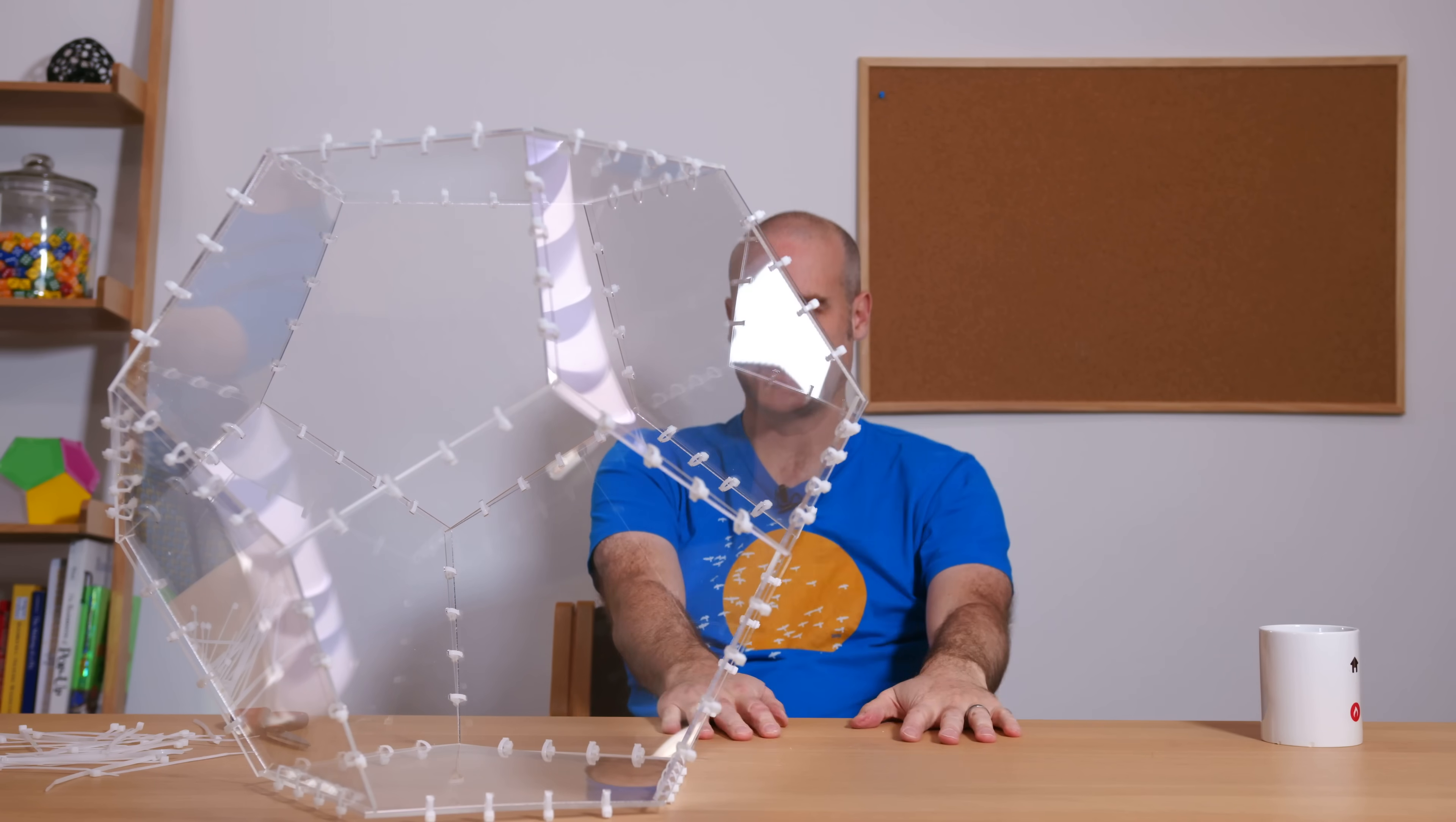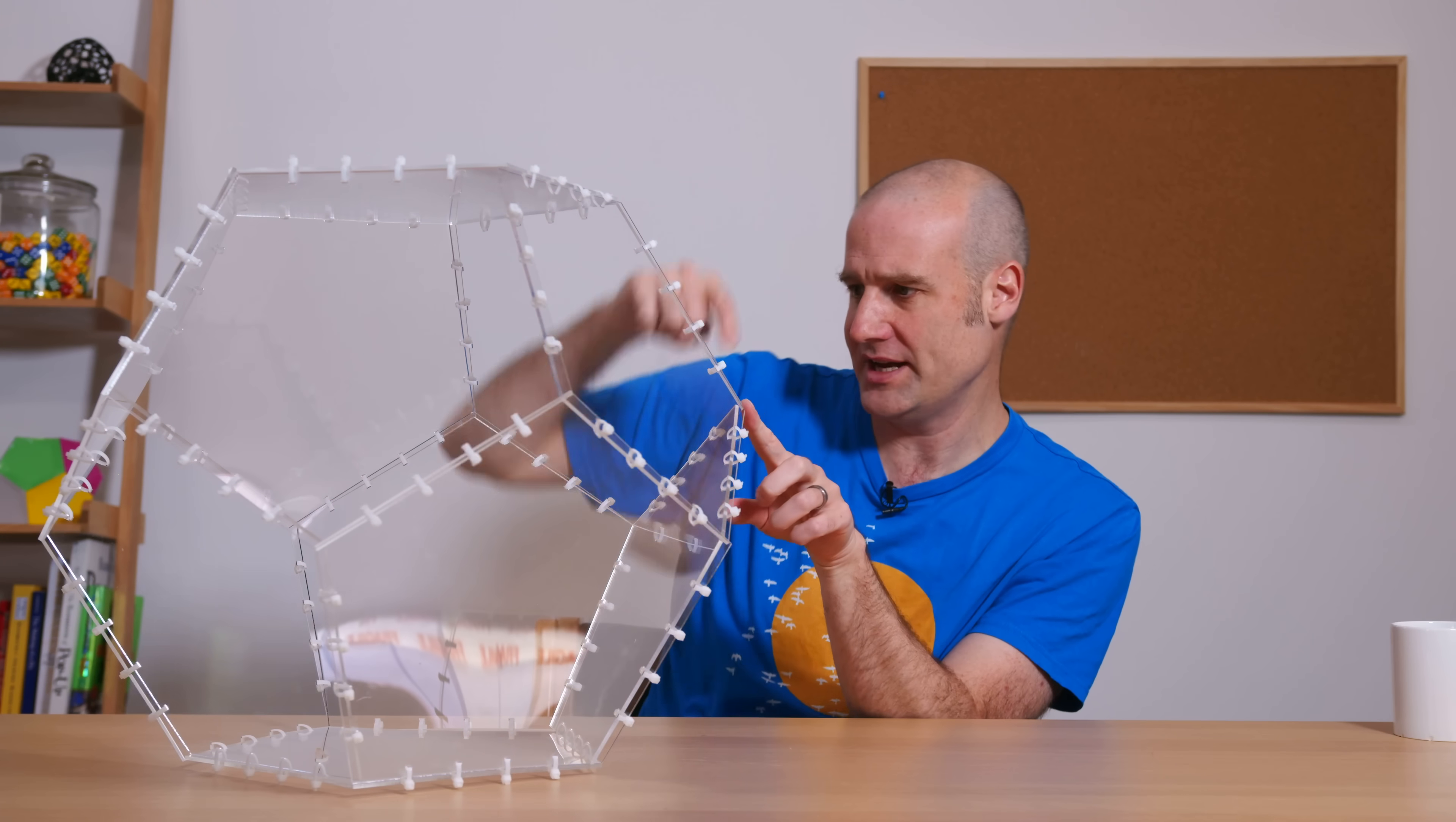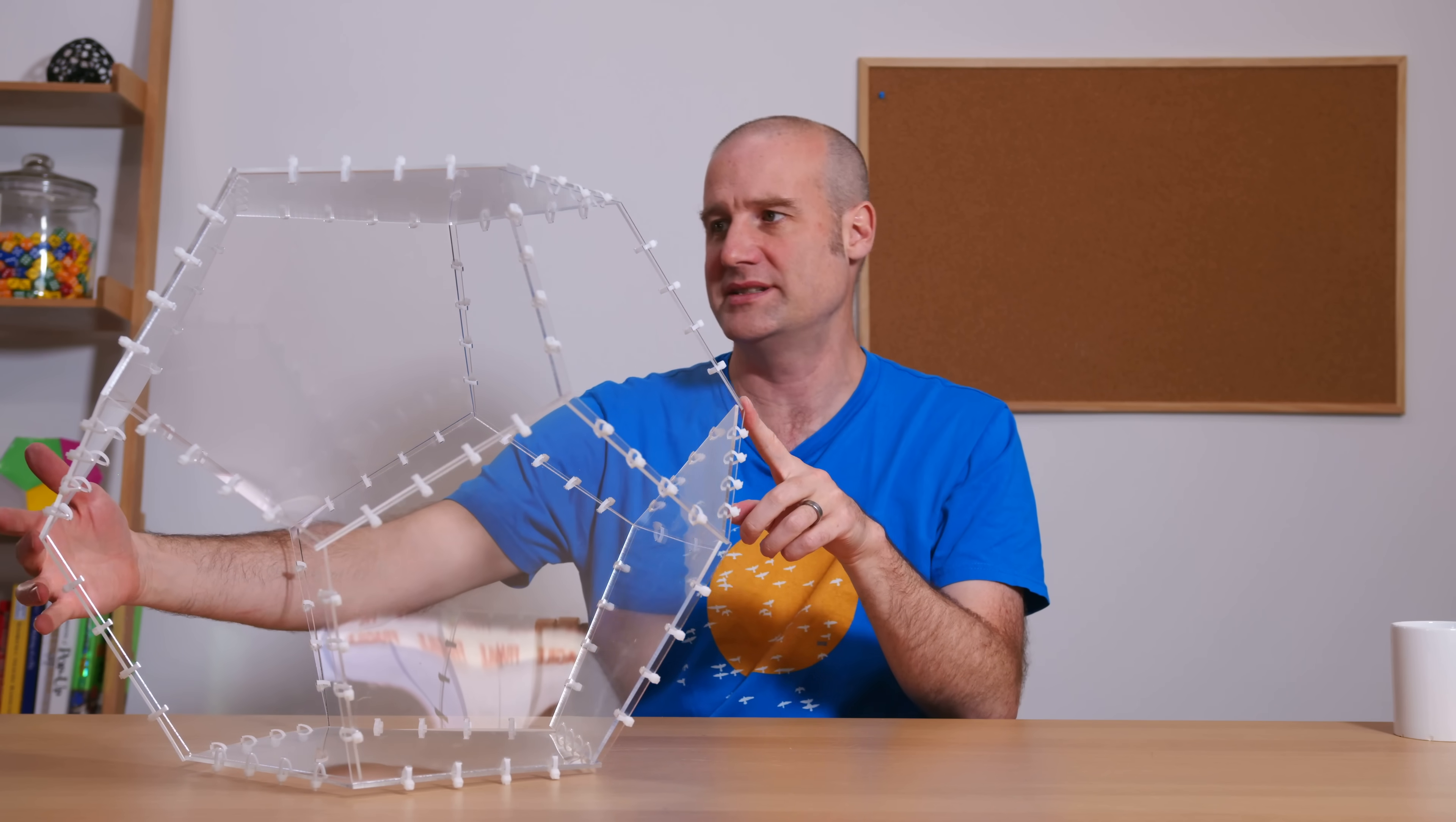Let's have a look at the diagonals. Unlike a cube, we have a choice of space diagonals. There are the longest ones if you go from this vertex to the opposite one over there. There are 20 vertices, so you pair them up.